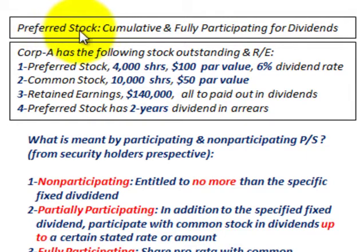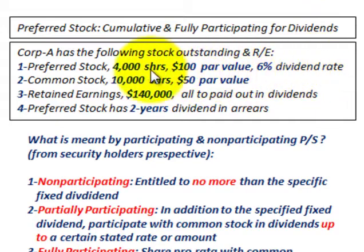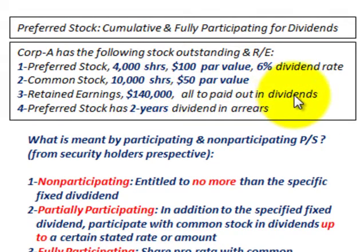We're going to be looking at preferred stock where it's cumulative and fully participating for dividends. Our example is where Corporation A has the following stock outstanding and retained earnings: preferred stock, 4,000 shares at $100 par value with a 6% dividend rate; common stock, 10,000 shares at a $50 par value; and retained earnings of $140,000, all to be paid out in dividends.